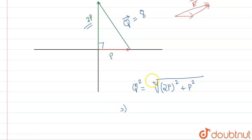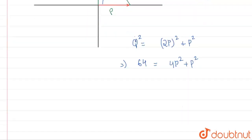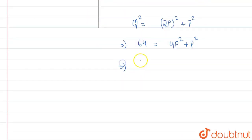So this will be 64 will be equal to 4P squared plus P squared. Now what we'll have is that P squared must be equal to 64 upon 5.